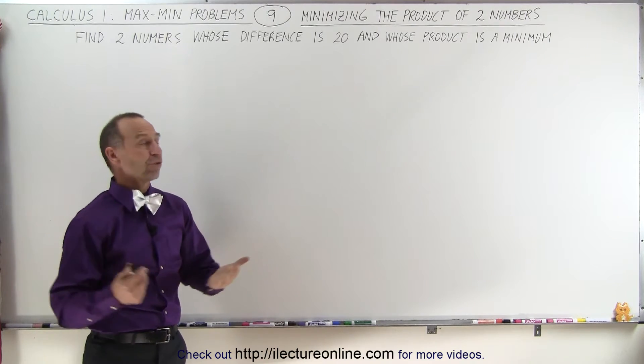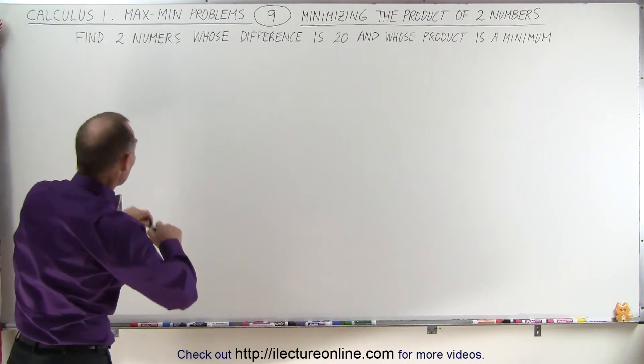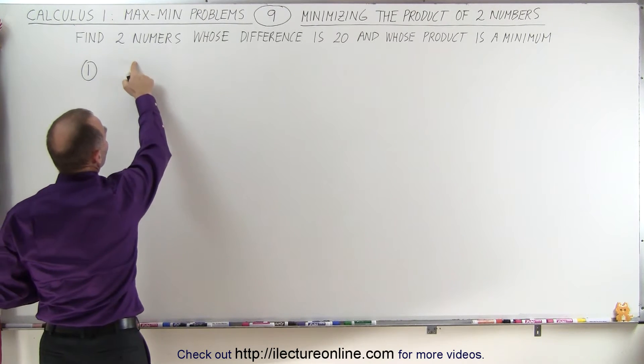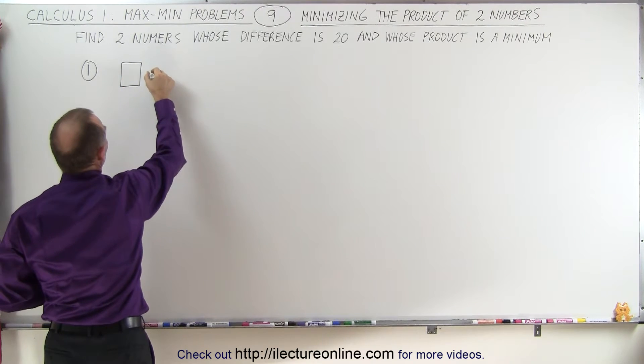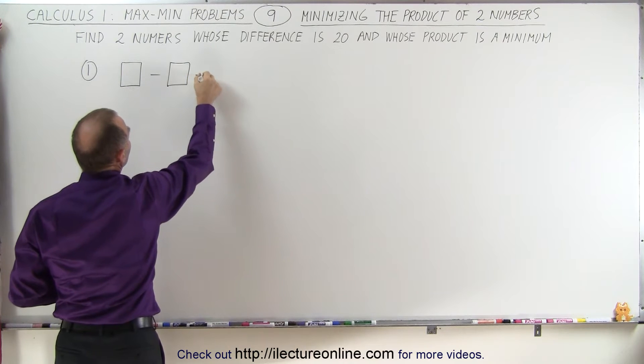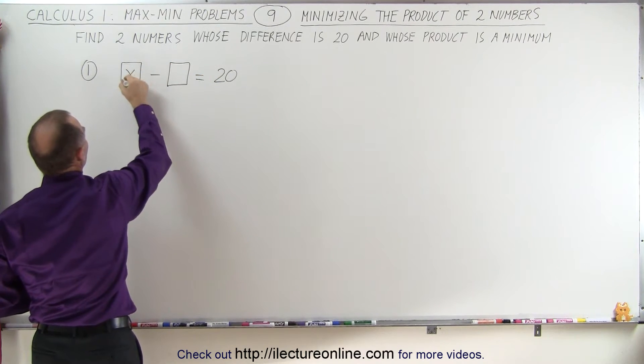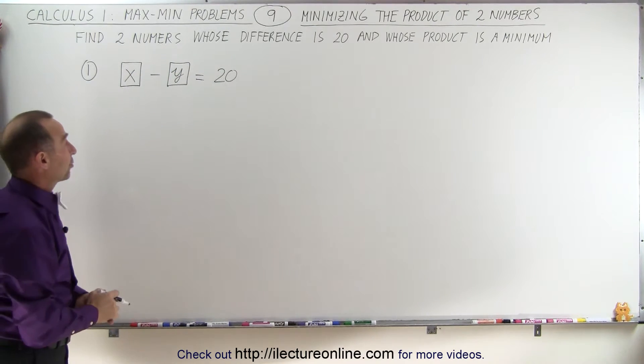So step one, we want to draw a picture. Now for this, you probably don't need much of a picture, but let's try anyway. We realize that we're going to take the difference of two numbers and set those equal to 20. So one number minus another number equals 20, and let's call the two numbers X and Y because they're both unknown. So that's good enough for a picture in this case.